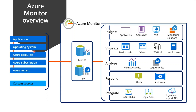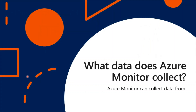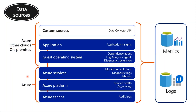Guest OS monitoring data covers the operating system on which your application is running, whether in Azure, in the cloud, or on-premises. Azure resource monitoring data covers the operations of an Azure resource. Azure subscription monitoring data covers the operations and management of an Azure subscription, as well as the health and operations of Azure itself. Azure tenant monitoring data covers operations of tenant-level Azure services such as Azure Active Directory. Monitoring data in Azure comes from sources organized into tiers: Azure tenant, Azure platform, guest operating system, applications, and custom sources.